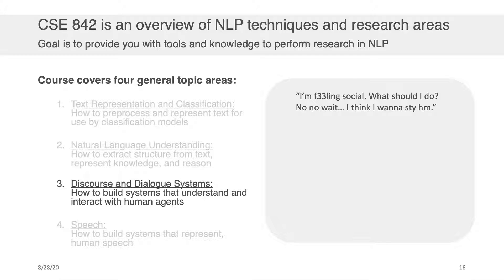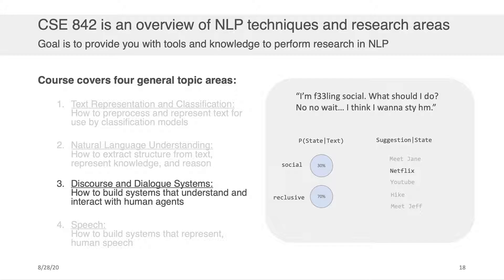In the third quarter of the semester, we'll be speaking about discourse and dialogue systems — how to build systems that understand and interact with human agents. For example, given a string from a chat system like 'I'm feeling social. What should I do? No, wait. I think I want to stay home,' we want to determine if the person is feeling social or reclusive and give a suggestion about what activities they should do. This kind of problem is within the domain of discourse and dialogue systems.